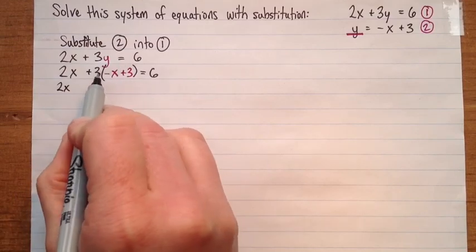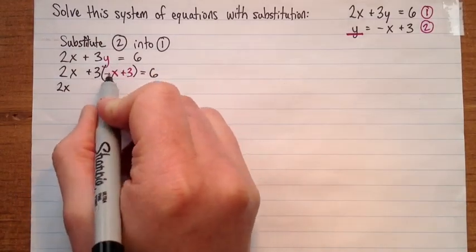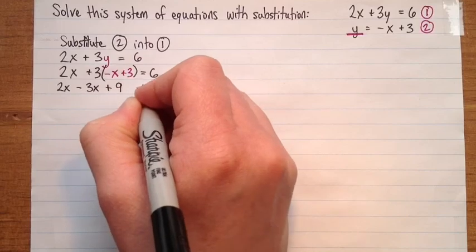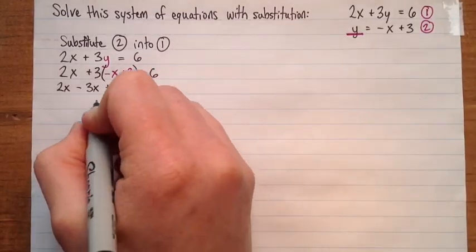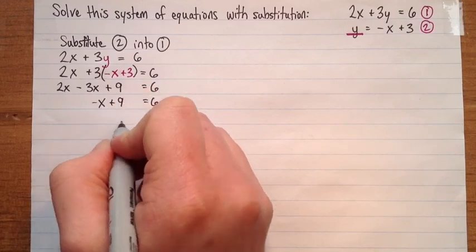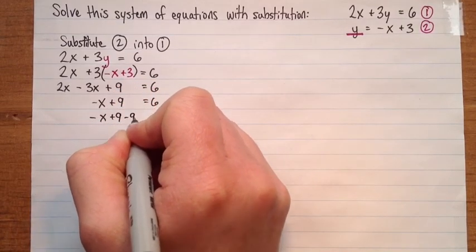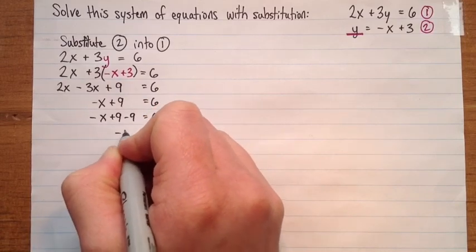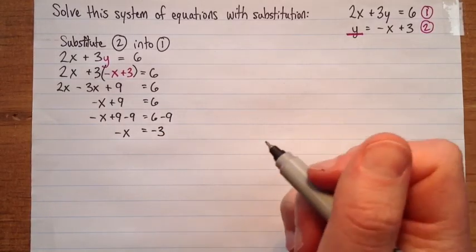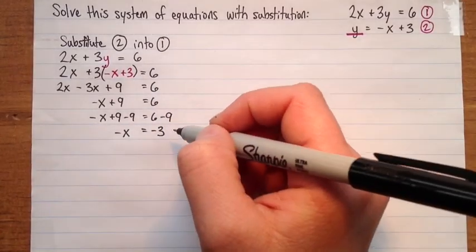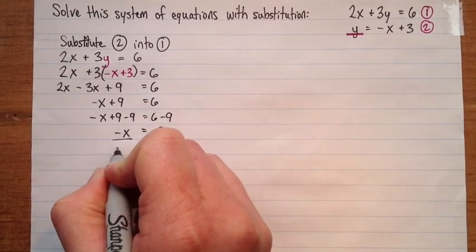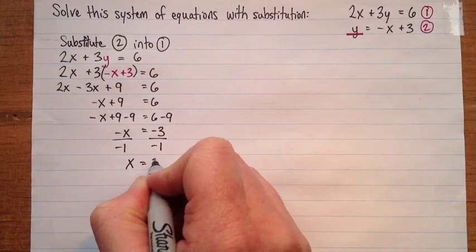This is really nice — now I just have a linear equation. So: 2x plus — multiplying out 3 times (negative x plus 3) gives minus 3x plus 9 — equals 6. Simplifying: 2x minus 3x is negative x, so negative x plus 9 equals 6. Subtract 9 from both sides: negative x equals negative 3. Divide by negative 1: x equals 3.